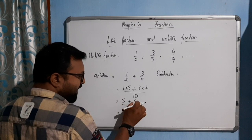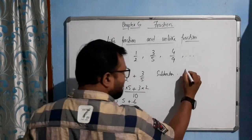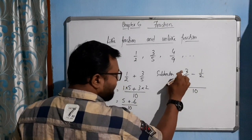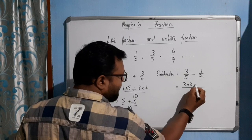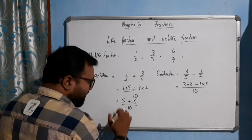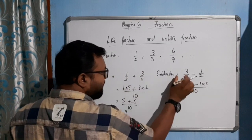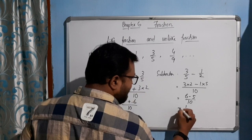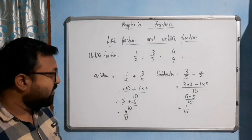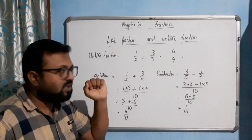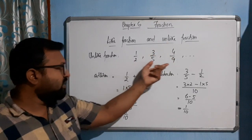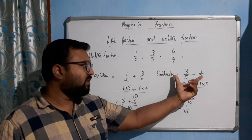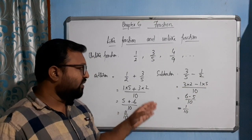For subtraction of unlike fractions, let's compute 3/5 − 1/2. Since 3/5 is greater, we write it first. We take the LCM of 5 and 2, which is 10. Then: 3 × 2 = 6 and 1 × 5 = 5, so we get 6 − 5 over 10 = 1/10. I hope you have clearly understood like fractions, unlike fractions, and how to perform addition and subtraction for both types.